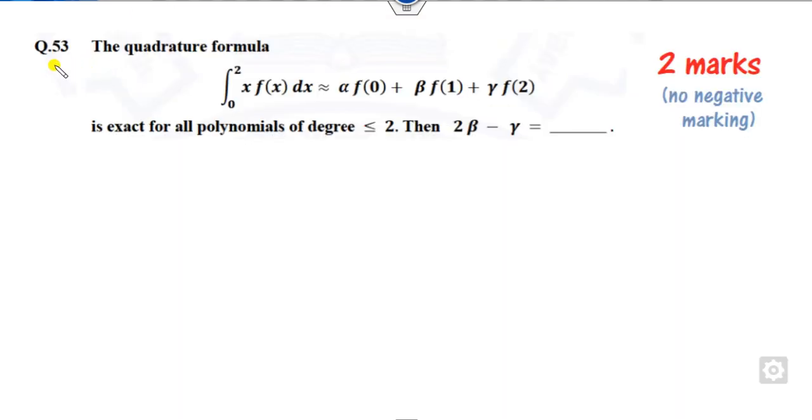Now let's see question number 53, which is again worth two marks. This question is mostly asked in the GATE examinations. This is the quadrature formula of degree less than 2. You have to find the basis of this polynomial of degree 2, that is 1, x, and x².